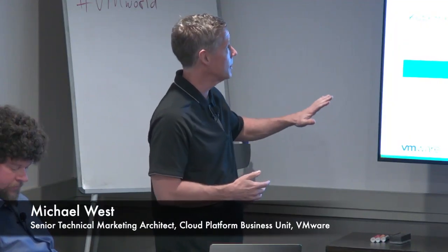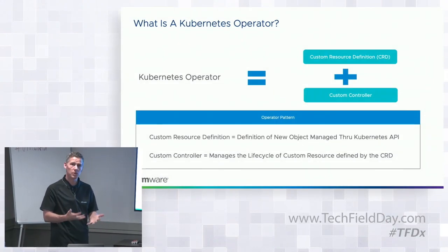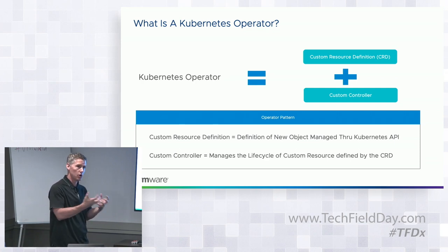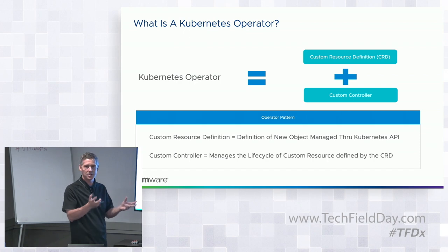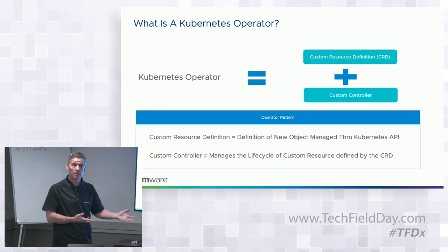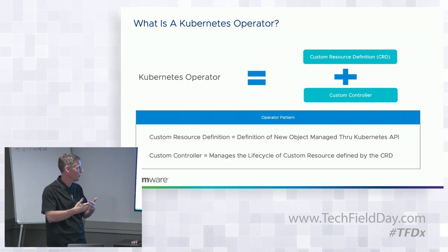I wanted to start with just a couple of terms because we've sort of thrown them around in the context of this product. A Kubernetes operator is really a combination of a custom resource definition — the idea that we could have Kubernetes manage custom objects that aren't part of native Kubernetes. You define this custom resource definition, which is essentially the set of metadata you want to store about any object, whether you're defining a virtual machine or just a custom object, and Kubernetes inherently knows how to create that object within its management plane.